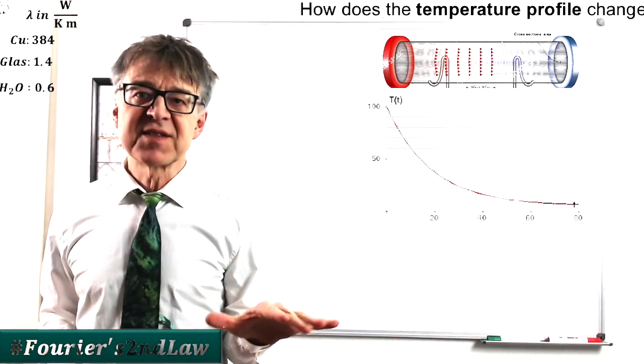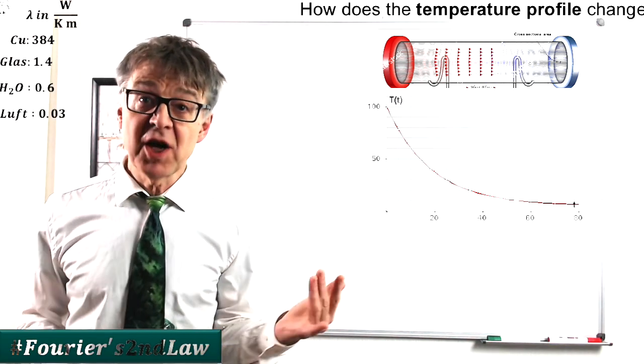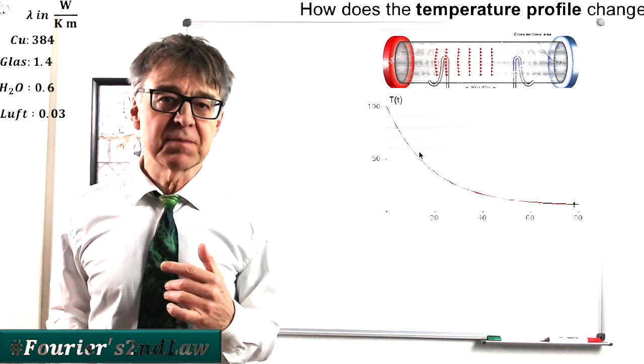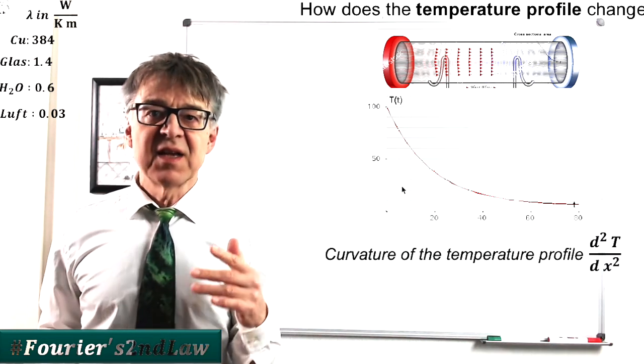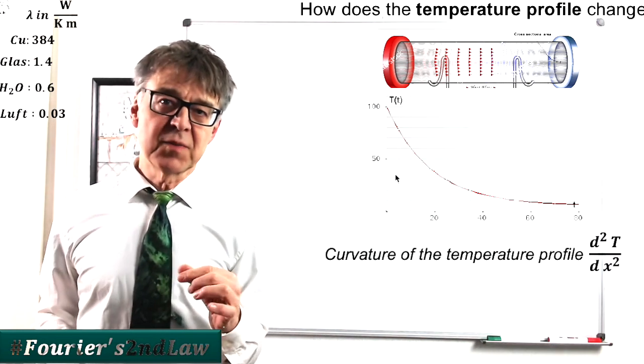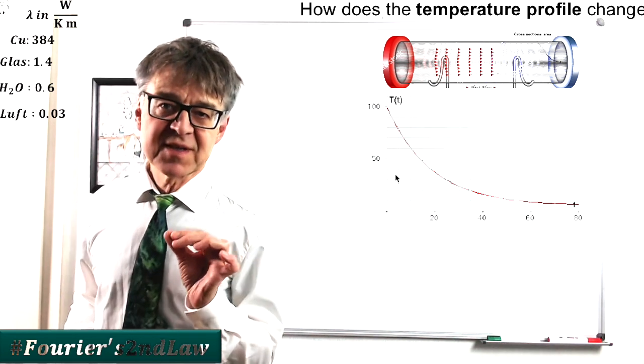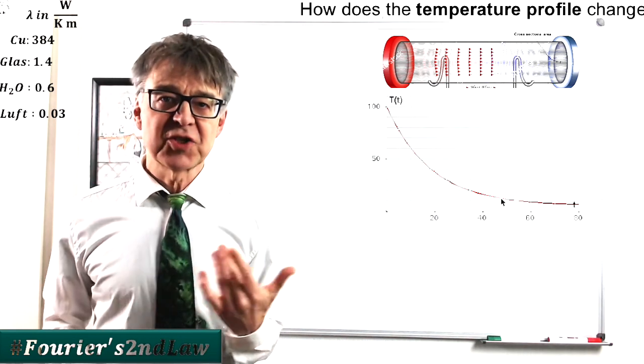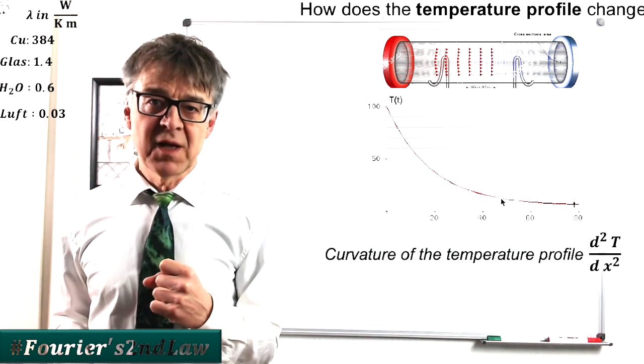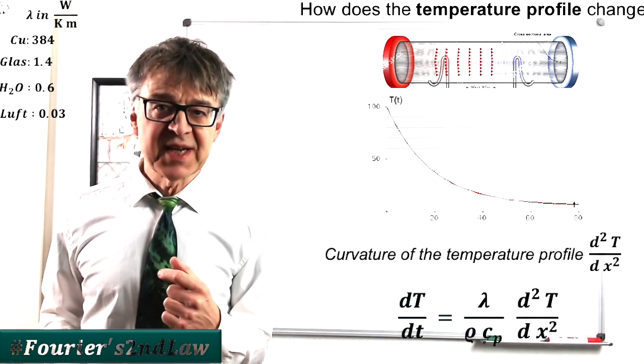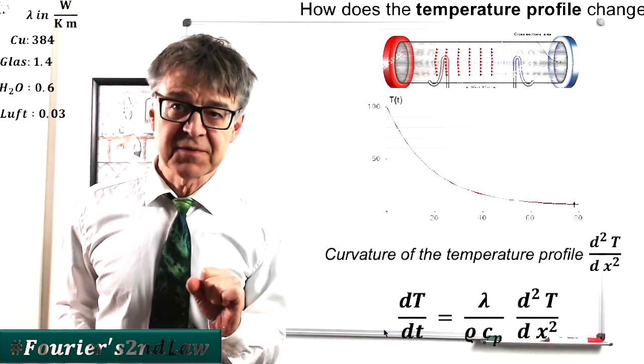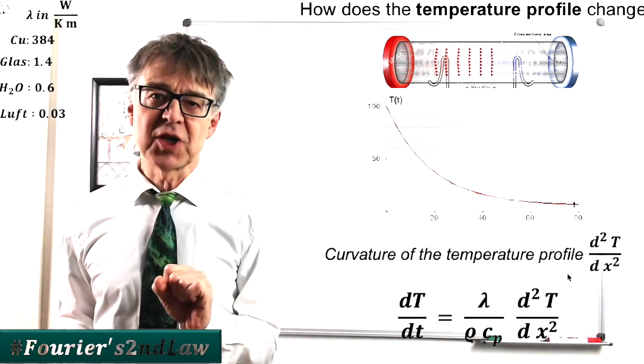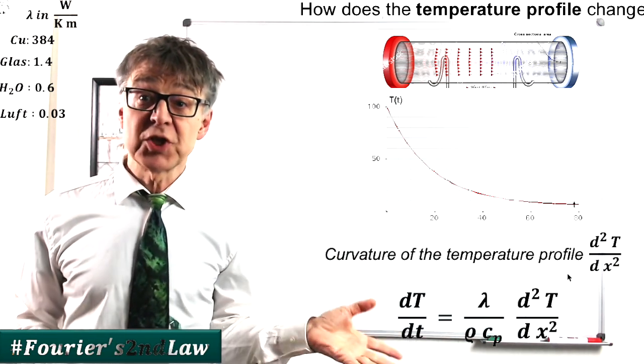If the temperature profile is not linear, but has a curvature, we talk about unsteady state or transient heat conduction. In this case, temperature changes do occur in the system, which are described by Fourier's second law. The larger the curvature of the temperature profile, the larger the change in temperature. This is described mathematically by the second derivative. In our example, the arrow marks the location of the largest curvature. Here, the temperature will change the most.